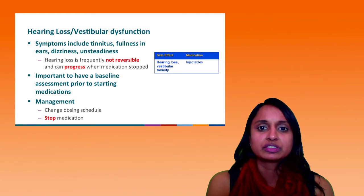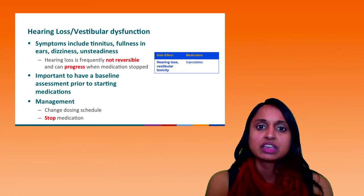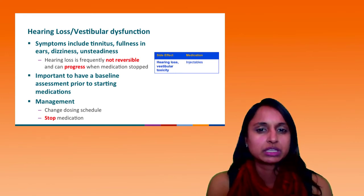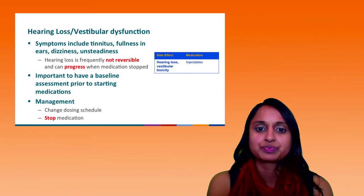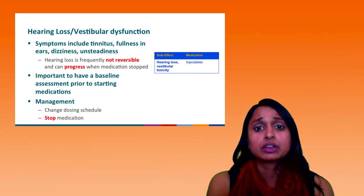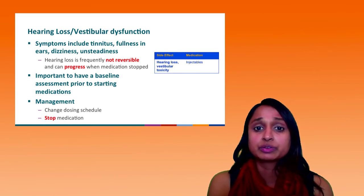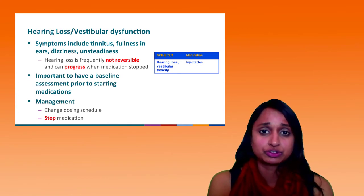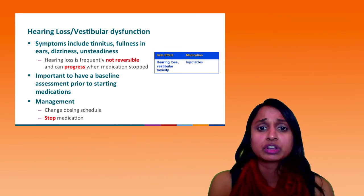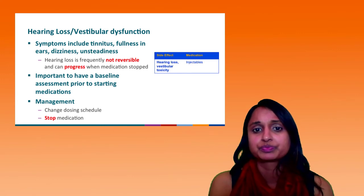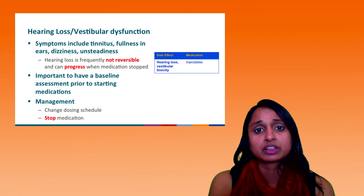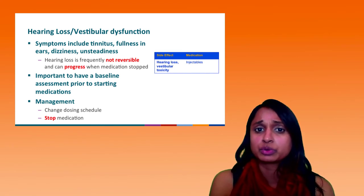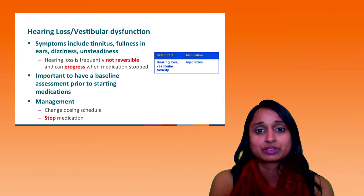Hearing loss and vestibular dysfunction are often associated with the second-line injectable medications. Symptoms include tinnitus — a ringing in the ears — fullness in your ears, dizziness, or unsteady gait. Unfortunately, the hearing loss is frequently not reversible, so you really want to address it as soon as you can, and it can even progress after the medication is stopped. It's important to have a baseline so you know if the hearing loss is changing. If your patient experiences some hearing loss, you can try changing from daily medication to three times a week or two times a week. If hearing loss continues to progress, I would probably stop the medication, as permanent hearing loss is really disruptive for somebody's life.